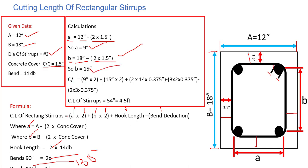Now cut length will be equal to, as per this formula, a times 2, which is 9 times 2, and then b times 2, which is 15 times 2. You can see we have it here. Plus 2 times 14 db, where db is the diameter of bar, which is 0.375 inches or 3/8.